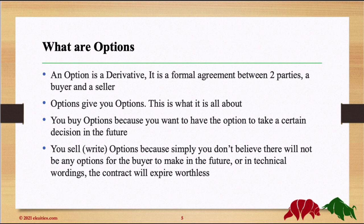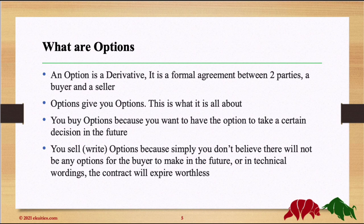What I always say about Options is: options give you options. You buy options because you want to have an option to take a certain decision in the future. On the other hand, if you sell an options contract — called writing an option — you simply don't believe there will be a valuable option for the buyer to make in the future. You expect the contract to expire worthless.